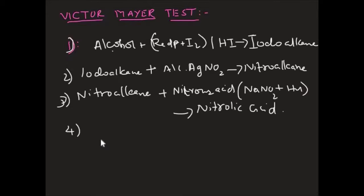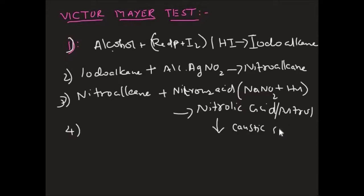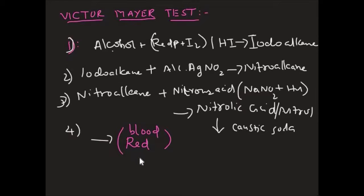In the fourth step, we will get different colors. If we get a blood red color, then that is called primary alcohol. If we get blue color, then that is called secondary alcohol. If there is no color and the compound remains colorless — or sometimes we can call it white — then that alcohol we will call tertiary alcohol in the Victor Meyer test.